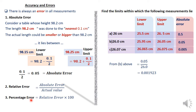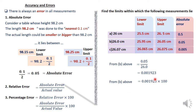Moving on to percentage error — it is normally given as relative error times 100, where relative error is absolute error divided by actual value. So the percentage error can be given as this figure times 100. For the 26.0 case, the percentage error will be 0.001923 times 100, which gives 0.1923%. This explains the whole idea of accuracy, error, and its percentage form.